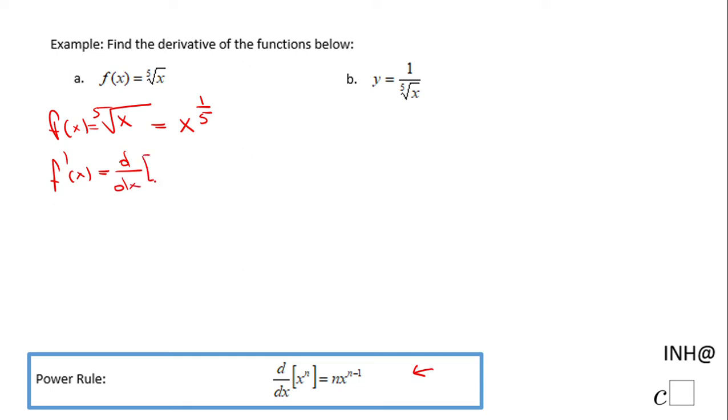So now I'm gonna move that 1 over 5, the power, up front in front of the expression, and then keep the x with 1 over 5 minus 1 as the exponent.